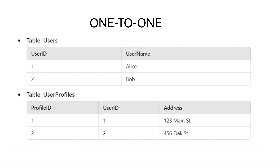Let's start with the one-to-one relationship. In a one-to-one relationship, each record in table A is linked to a single record in table B and vice versa. For example, consider a users table and a profiles table. Each user has one profile and each profile belongs to exactly one user. In the users table we have Alice and Bob, and profile ID one belongs to user ID one (Alice) and profile ID two belongs to user ID two (Bob).